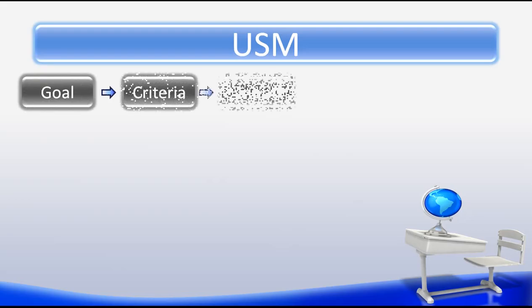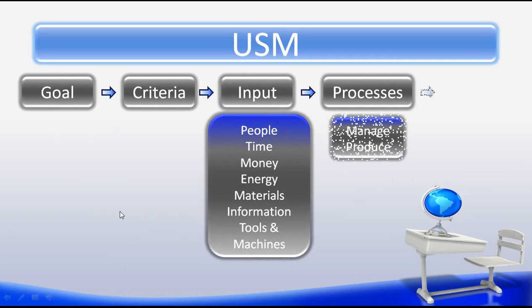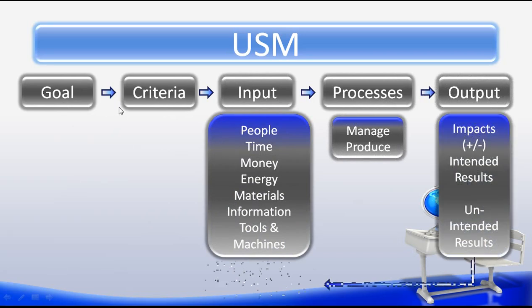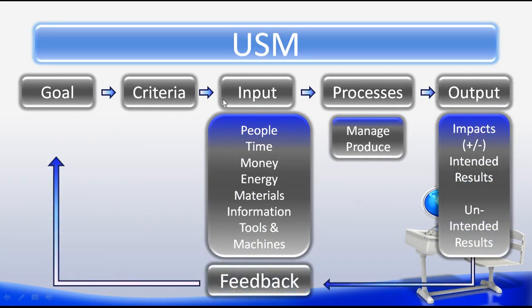A quick review of our USM: our first step is goal, our second step is criteria, and we have input — remember, we have seven inputs here — and we have processes, we have two processes; outputs, three outputs; and then our feedback, which we obtain through the entire system.